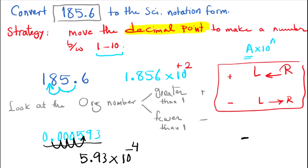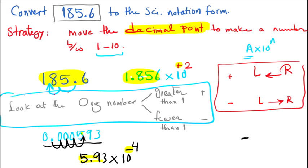Another method to verify your exponent is correct: if you started with a large number like 185 and made it smaller like 1.856, use a positive exponent. If you started with a smaller number like 0.000593 and made it larger like 5.93, use a negative exponent. Please have enough practice, and thank you for watching this video.